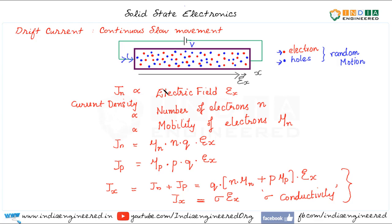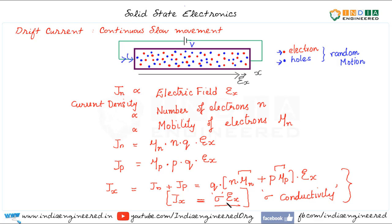To quickly recap: current density is proportional to the electric field, proportional to the number of charge carriers, and also depends on the mobility of charge carriers. Mobility of electrons is not the same as mobility of holes. We write drift current density separately for electrons and holes, and the total is simply sigma times the electric field. However, this assumes sigma does not change with the electric field — it is constant. At higher electric fields, sigma tends to be a function of the applied electric field, which we will discuss in a later video.